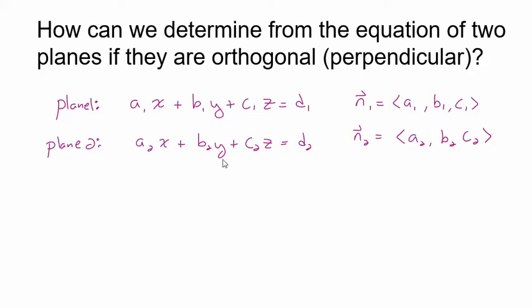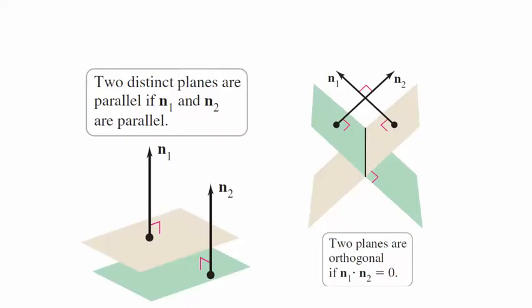Now, if these two planes are perpendicular to each other — try to visualize this — n1 is perpendicular to plane 1, and n2 is perpendicular to plane 2. If plane 1 is perpendicular to plane 2, what can you conclude about n1 and n2? Those two vectors would have to be perpendicular to each other. If the tan plane is perpendicular to the green plane, and n1 is perpendicular to the tan plane, then n1 has to be parallel to the green plane. And if n2 is perpendicular to the green plane and the green plane is perpendicular to the tan plane, n2 has to be parallel to the tan plane — so that makes these two normal vectors perpendicular to each other.